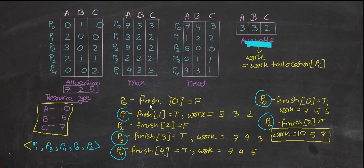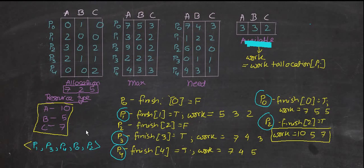Let's start the tutorial. There are five processes: P0, P1, P2, P3, and P4. For P0, it requires 7,4,3 but we only have 3,3,2 available — so it's not possible to execute P0 right now. The finish flag will be false and we'll come back to it. This is a loop, and if after looping we still can't execute a process, the system will be in a deadlock state.